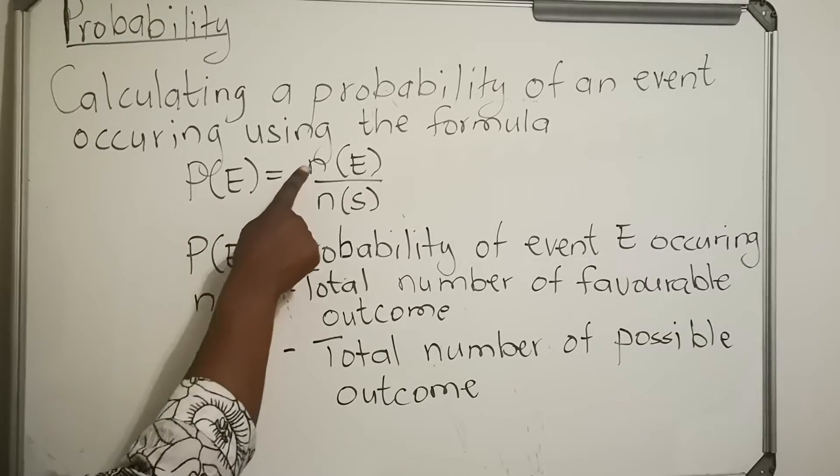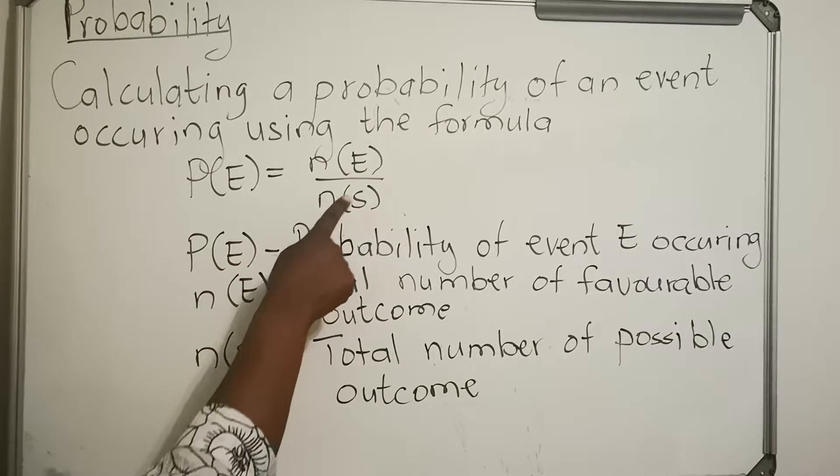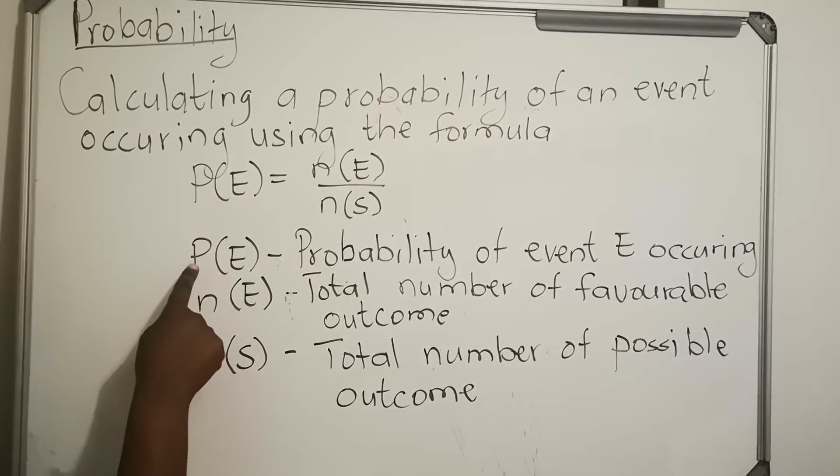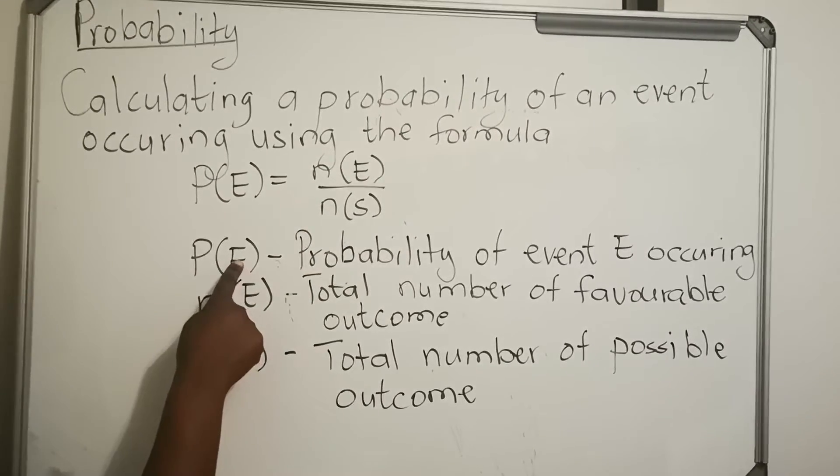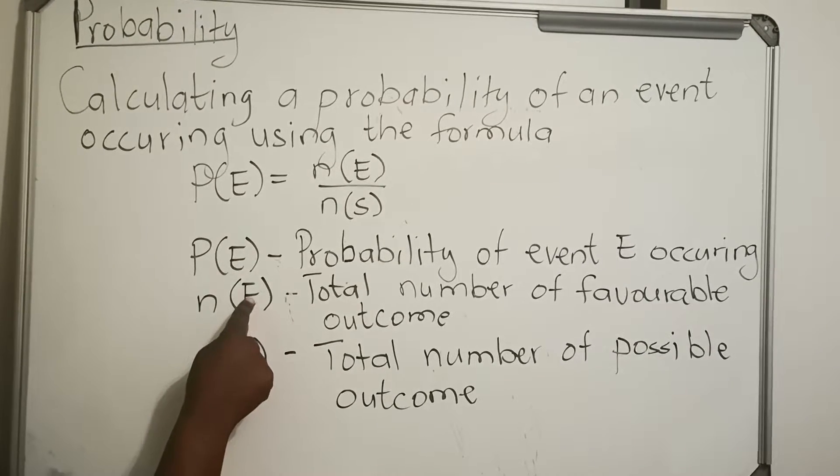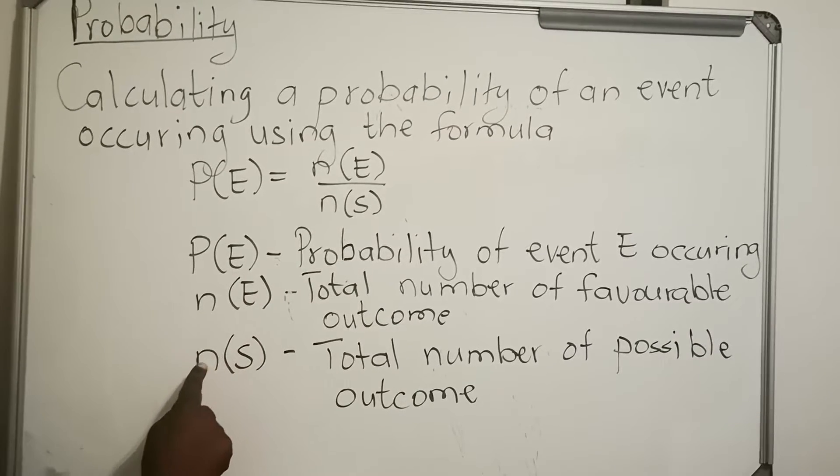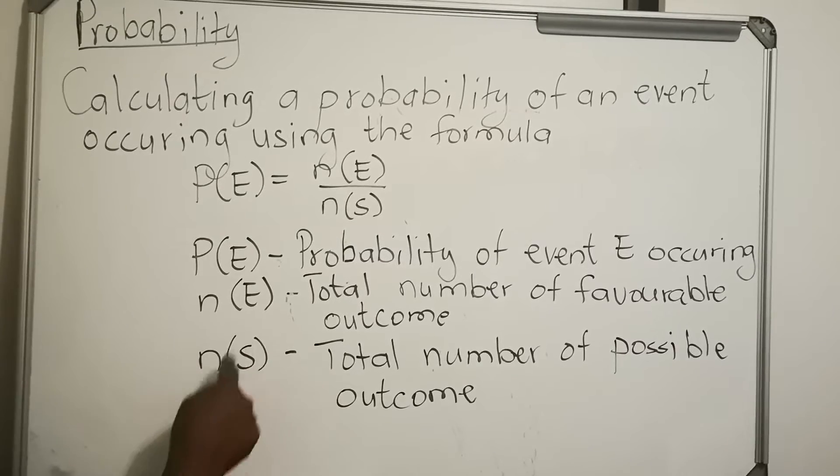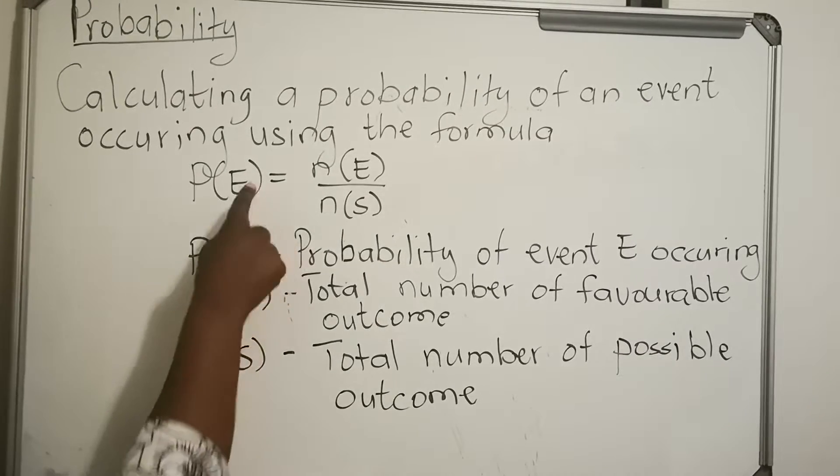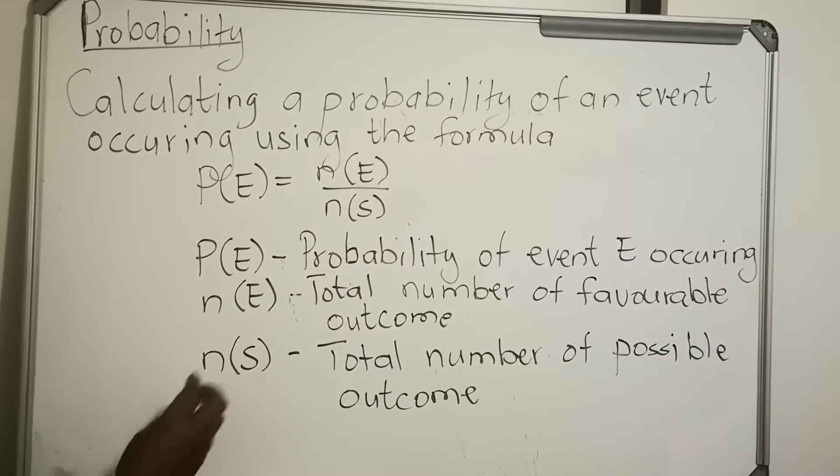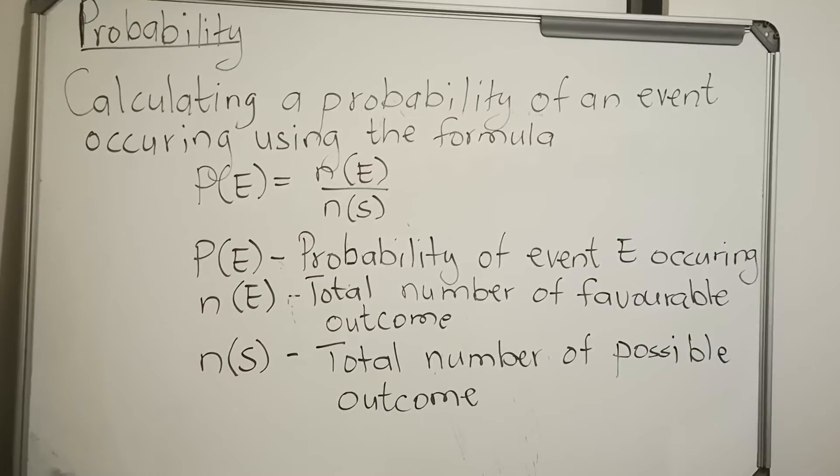The formula is P(E) equals n(E) over n(S). We're going to learn what this symbol stands for. The P is for probability. The E is for the event that we want, and the n is the number of that event. The n(S) is the number of the sample space. The sample space is the total outcomes that are there. When you write this, you find the probability of an event. We're going to look at an example and use the formula to see how it works.